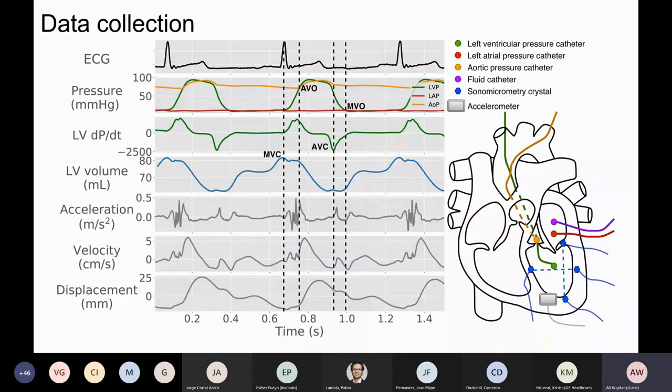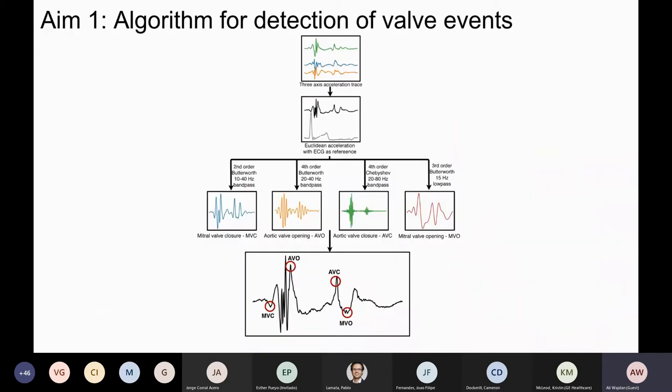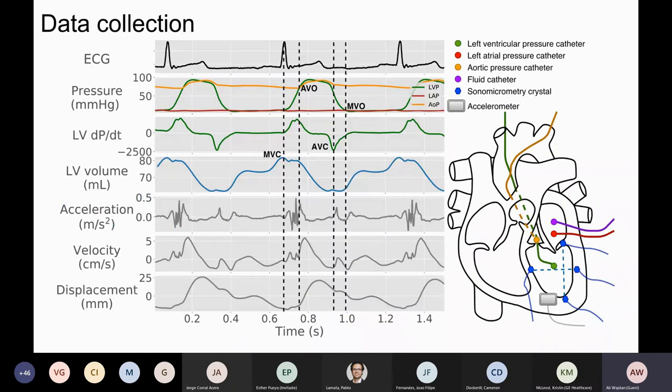So this figure shows a representative example of the data that was collected during our experiments in animal models. The dashed lines showed the four valve events, the opening and closing of the mitral and aortic valves, that we are interested in. We wanted to see if these vibrations could be automatically detected through the accelerometer readings or not, which later be used to estimate the left ventricular pressure trace.